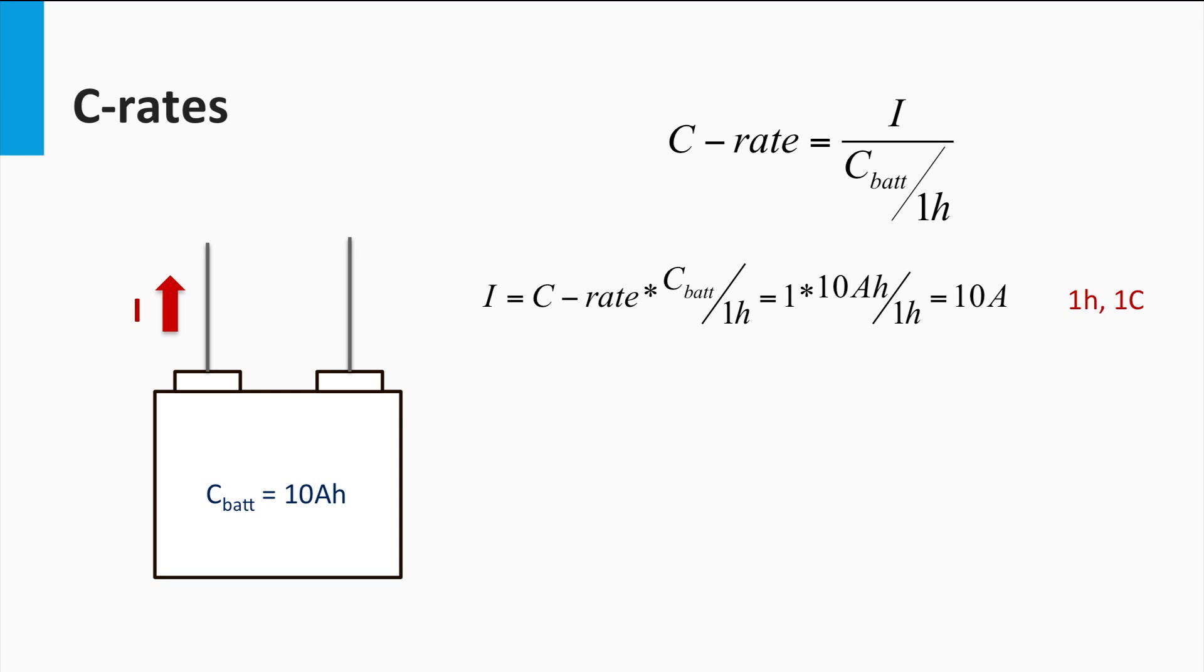This is where the C-rate comes in. C-rate is a measure of the rate of discharge of the battery relative to its capacity. The C-rate number is nothing but the multiple of the current over the discharge current that the battery can sustain over 1 hour. For example, a C-rate of 1C for a 10 Ah capacity battery would correspond to a discharge current of 10 Ah over 1 hour.